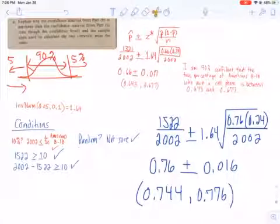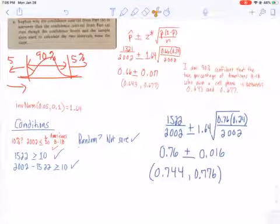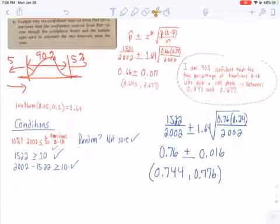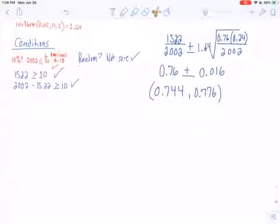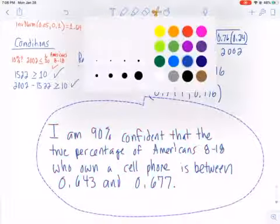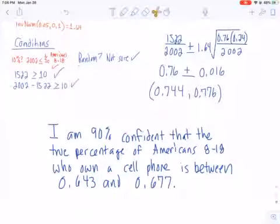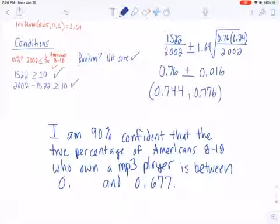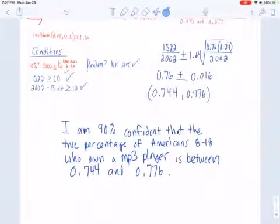Might think you're done. You're not. You have to interpret this thing. These numbers don't mean anything if we can't put them into context. I'm 90% confident the true percentage of Americans 8 to 18 who own an MP3 player is between 0.744 and 0.776. I can also say I'm 10% confident that the true percentage of Americans 8 to 18 who own an MP3 player is not between these two values.